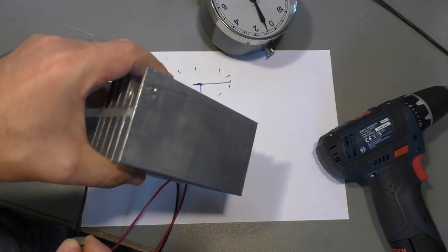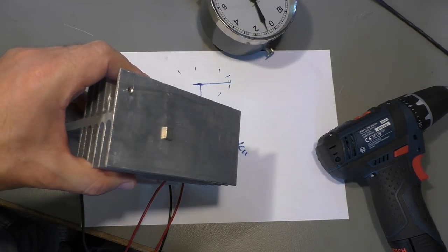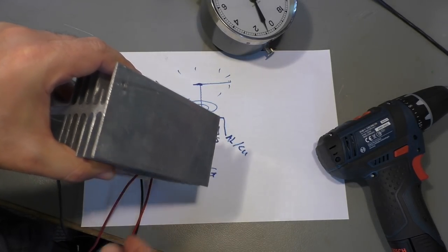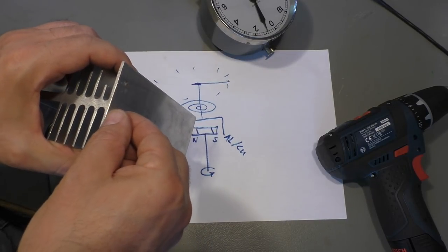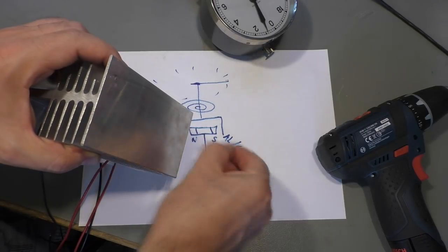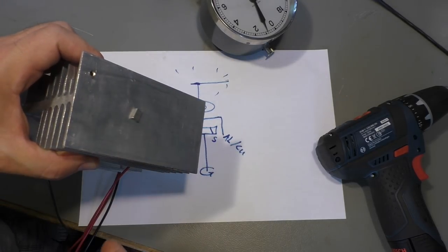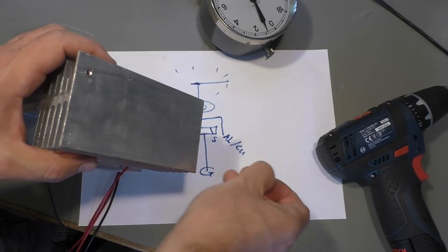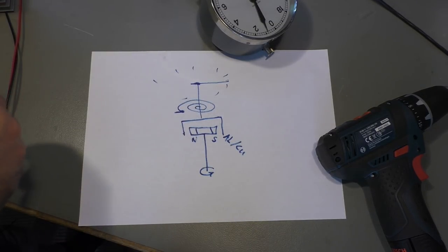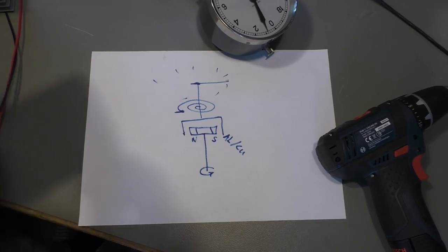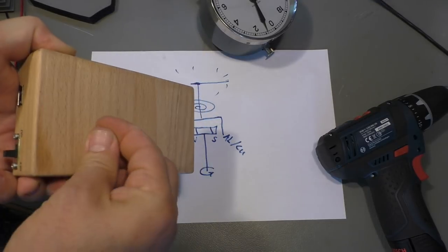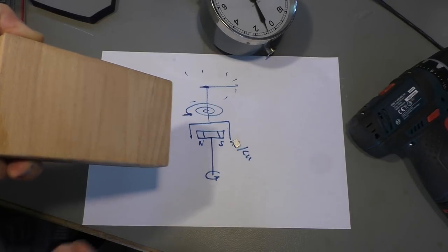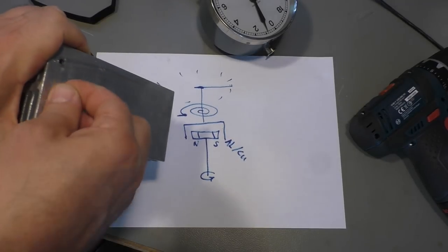But if I turn this here to a slope, something funny happens. The magnet slides down very slowly. I can put it almost vertical. You see, something strange happens. If I take something made of wood at the same angle, you see, that effect is not there. But it is there with the non-magnetic aluminum.